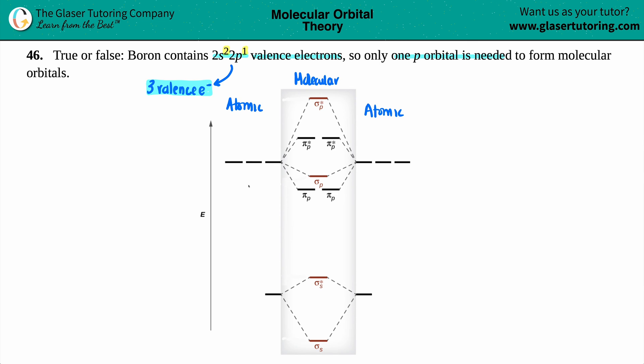So since we're talking about boron, I have just a B, the atom B on the left, I have just a B on the right, and I got B2, which makes the molecule, the molecular orbital, in the middle.